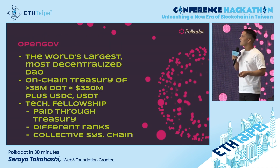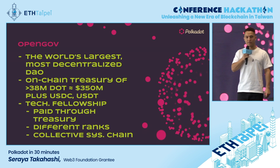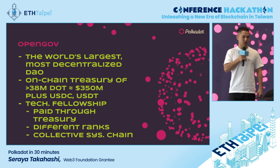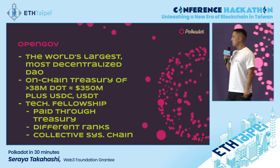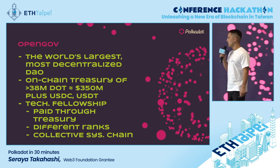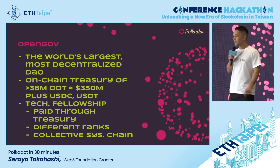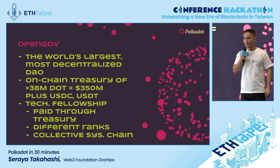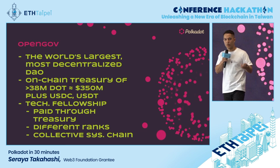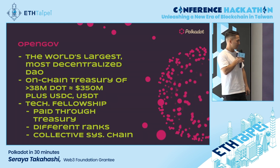Another thing you can do on Polkadot is OpenGov, our on-chain governance system. It is arguably the world's largest and most decentralized DAO. There is also a treasury managed by this DAO — currently holding more than 38 million DOT, which is around 350 million US dollars. Whoever wants to contribute and be compensated can submit a proposal, and then the community votes on it using their tokens.